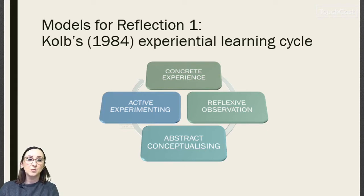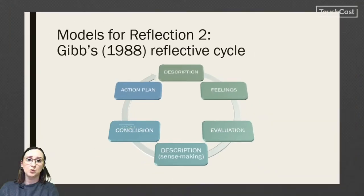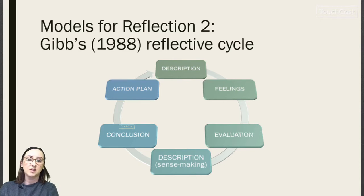The next model is Gibbs' reflective cycle, which was developed from Kolb and is particularly prominent in healthcare. This model has six stages. Stage one involves describing the event — recalling what happened, the where, what, when, why, who and how.